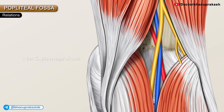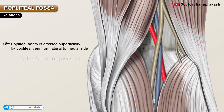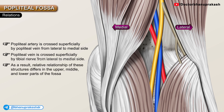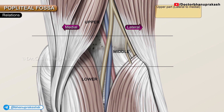Regarding the relationship of the tibial nerve, popliteal vein, and popliteal artery: the popliteal artery is crossed superficially by the popliteal vein from lateral to medial side, which is in turn crossed superficially by the tibial nerve from lateral to medial. As a result, the relative arrangement differs in the upper, middle, and lower parts of the fossa. In the upper part, from lateral to medial, the order is nerve, vein, and artery. In the middle part, from superficial to deep, the order is also nerve, vein, and artery.